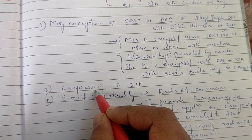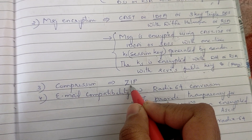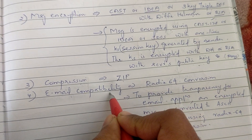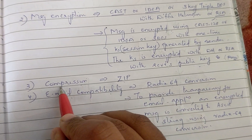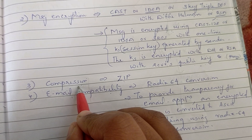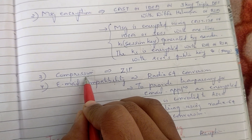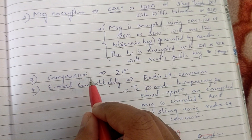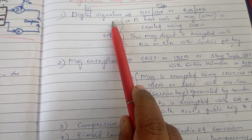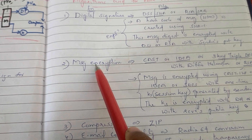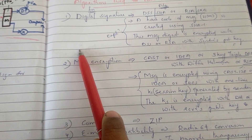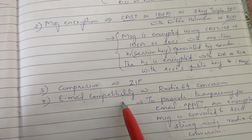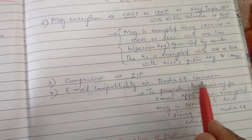Then we compress the message and send it. The message is transmitted via email. The order of operations is: digital signature first, then compression, then encryption. For email compatibility, we perform Radix-64 conversion.